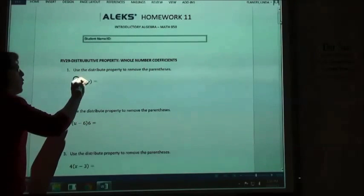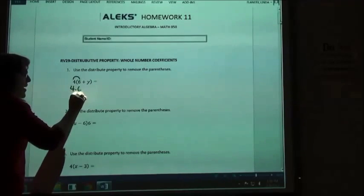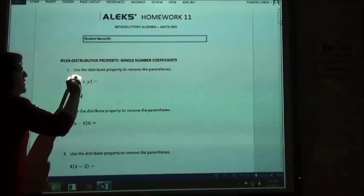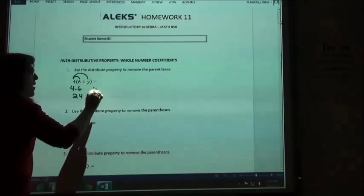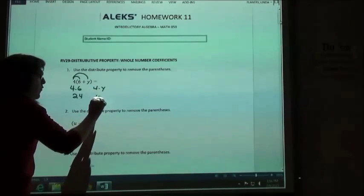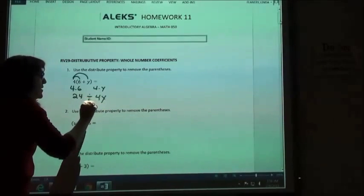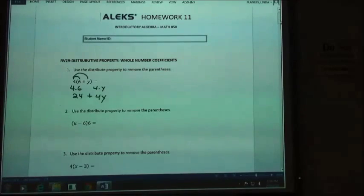So basically what I'm doing is taking the 4 times the 6. 4 times 6 is 24, and then I'm taking the 4 times the y. 4 times y we write as 4y, and we have to put the plus sign in between them to separate those two terms.